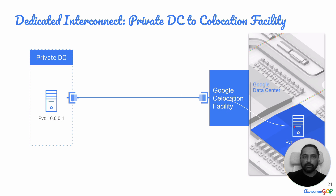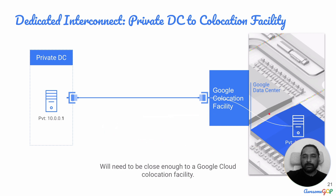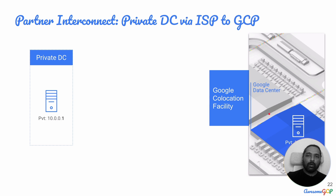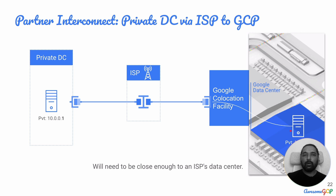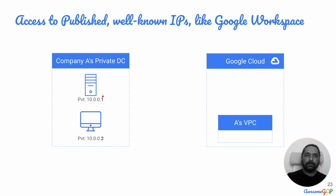If you don't have proximity to a co-location facility, the alternative is to go via an ISP — partner interconnect — which also gives you RFC 1918 private addressing. Interestingly, even over Cloud VPN going over the public internet, you again have RFC 1918 private addressing. So both partner interconnect and Cloud VPN support private addressing even without a direct connection.